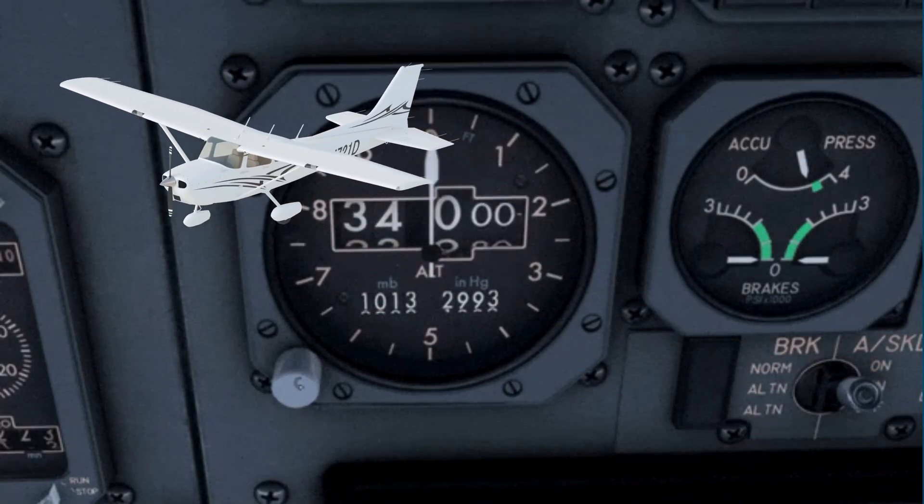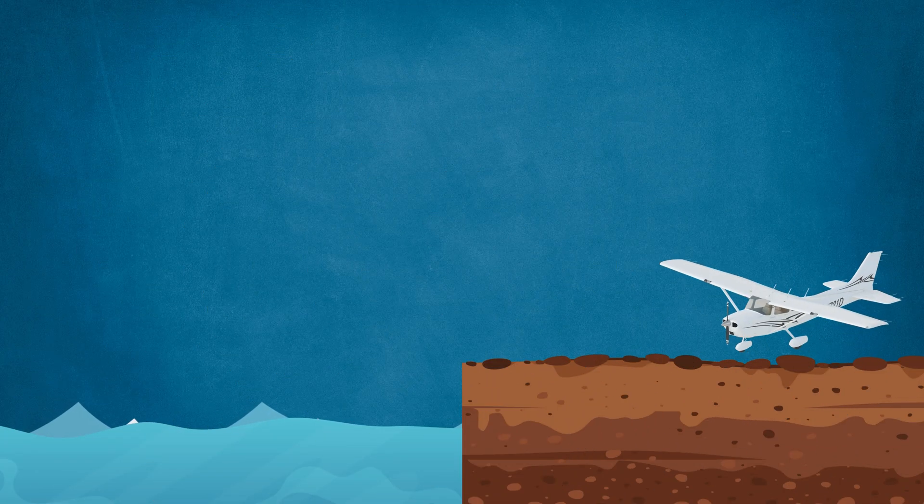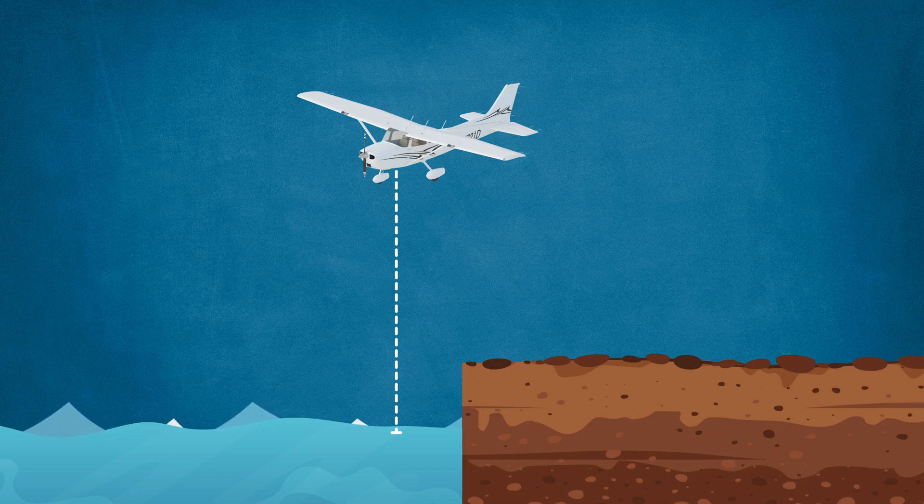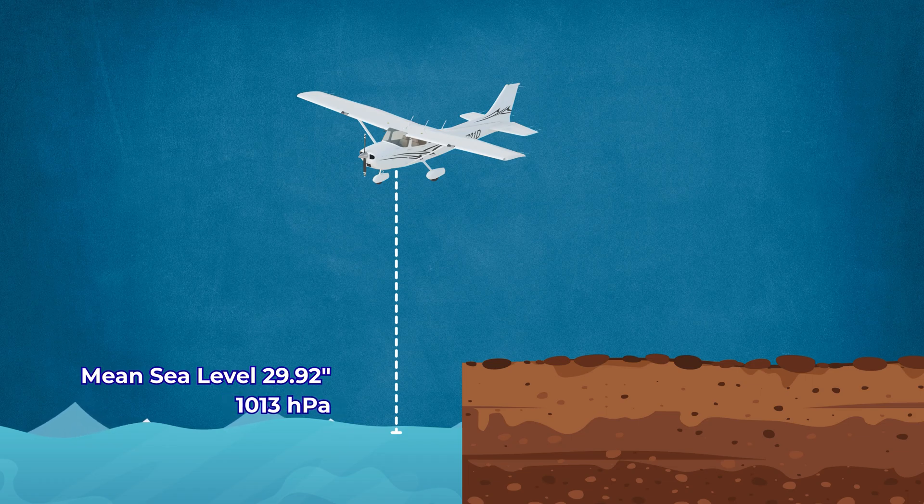How much do you know about the altimeter in your airplane? Altimeters measure height above particular pressure levels. To do this, they compare the pressure of outside static air to the standard pressure of 29.92 inches of mercury, or 1013 hectopascals, of air at sea level.